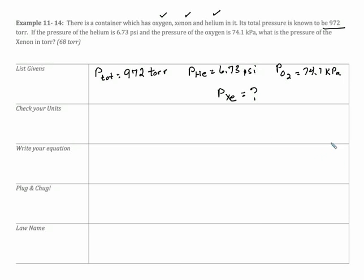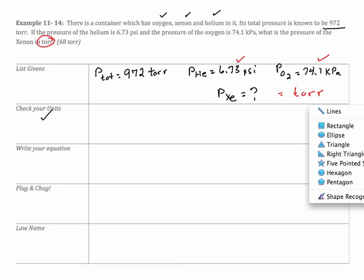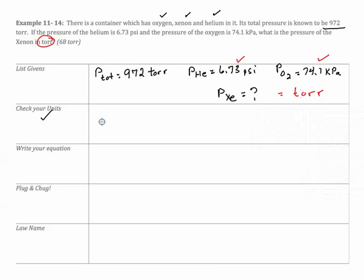So I've listed my givens. Now, the next step, and you won't get this framework, you've got to learn this framework on your own, is to check your units. Well, if I'm going to add these together, these all have to be in the same units. And I want my final answer in torr. So that means I need to convert psi to torr and kilopascals to torr. So that's a quick dimensional analysis. So there's going to be two of them. We've got to convert two pressures.